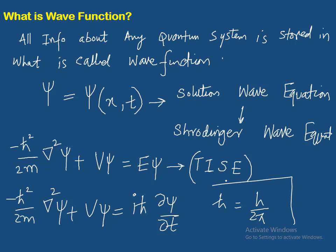Ye H-bar basically H over two pi ke barabar hai. Ye Schrödinger equation hai, aur iska solution psi function hai. Aap deekh sakte hain — yahan pe psi hai, yahan pe psi hai, yahan pe psi hai. Schrödinger equation ko solve karenge to aapko solution milega, wave function psi kehlayega.